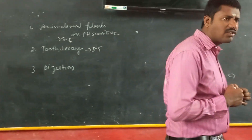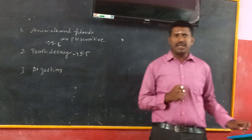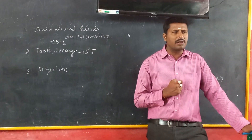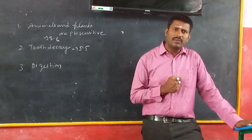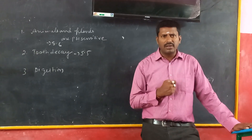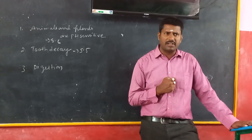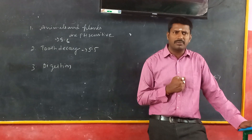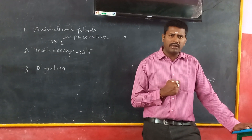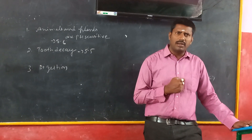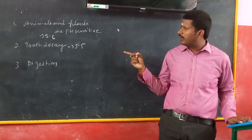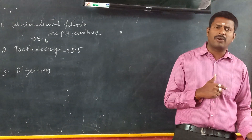We have a specific pH value. If our pH value reduces below 5.5, then we can describe the situation as tooth decay. Our teeth enamel is made up of calcium. If the pH value is less than 5.5, it is going to destroy the teeth enamel, and our teeth will be corroded.